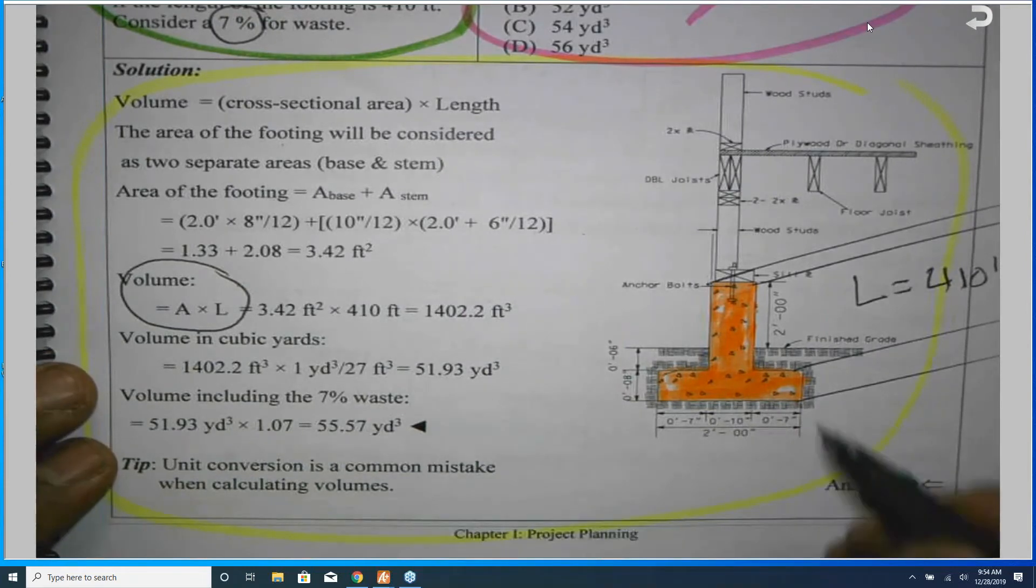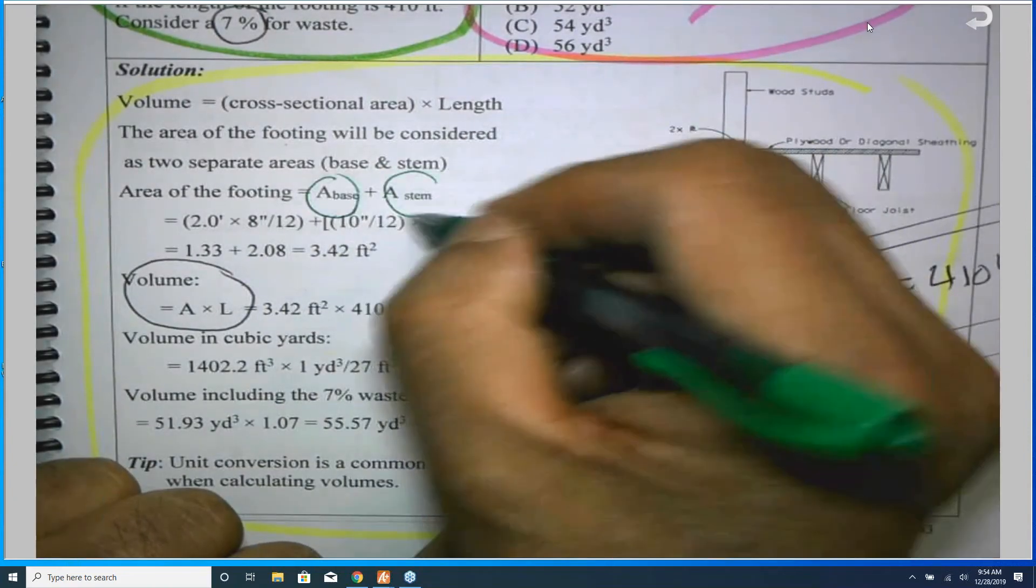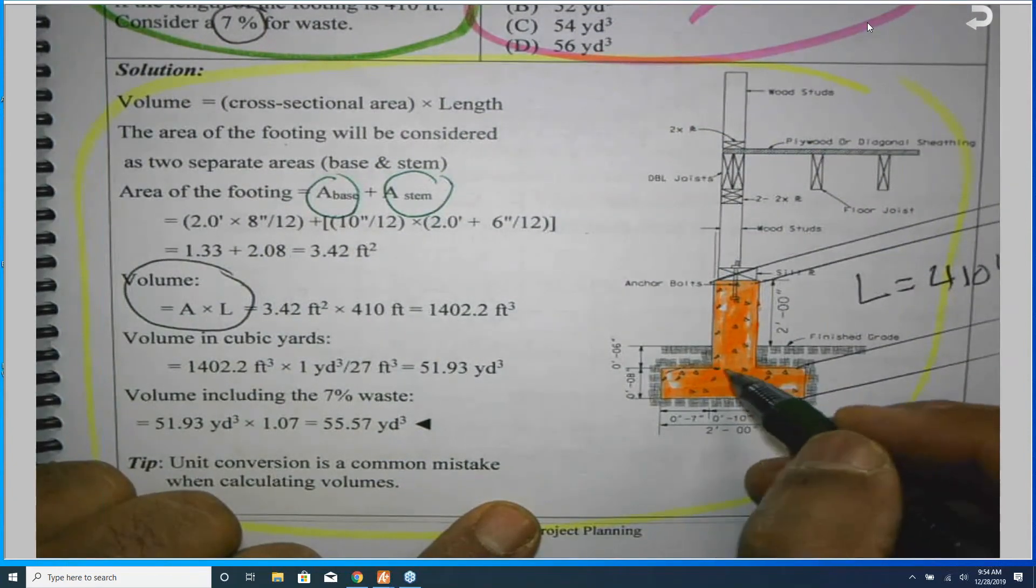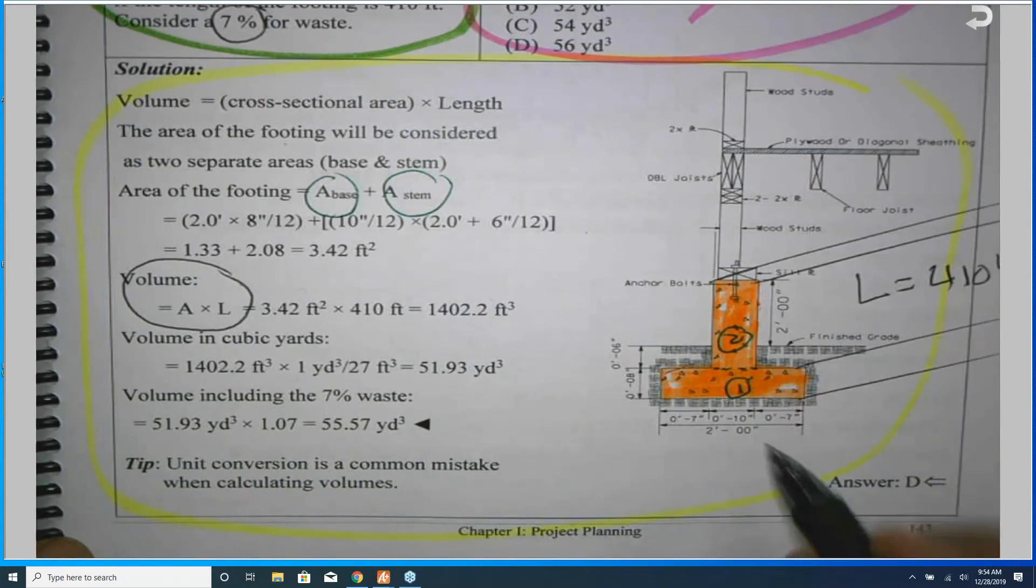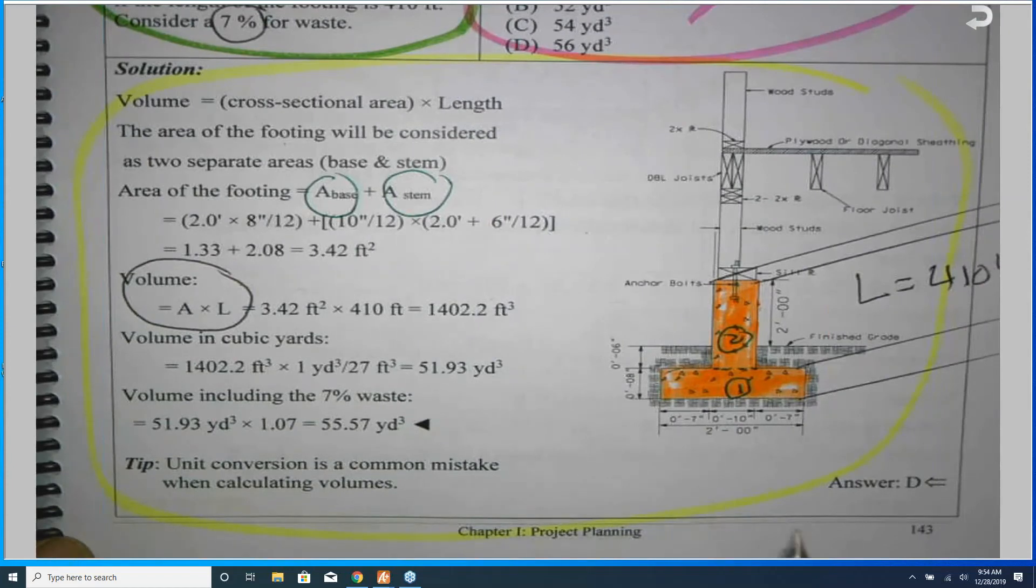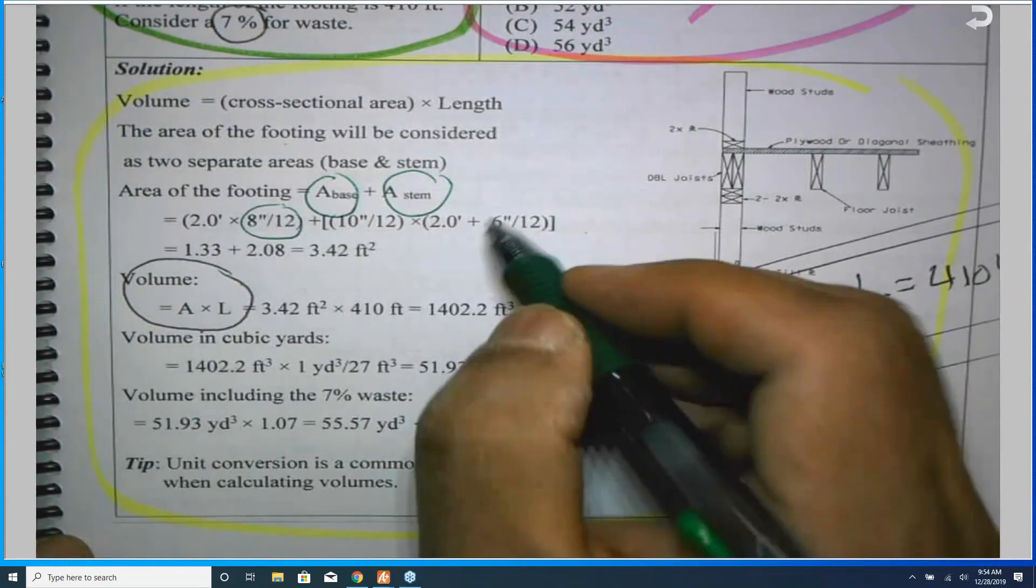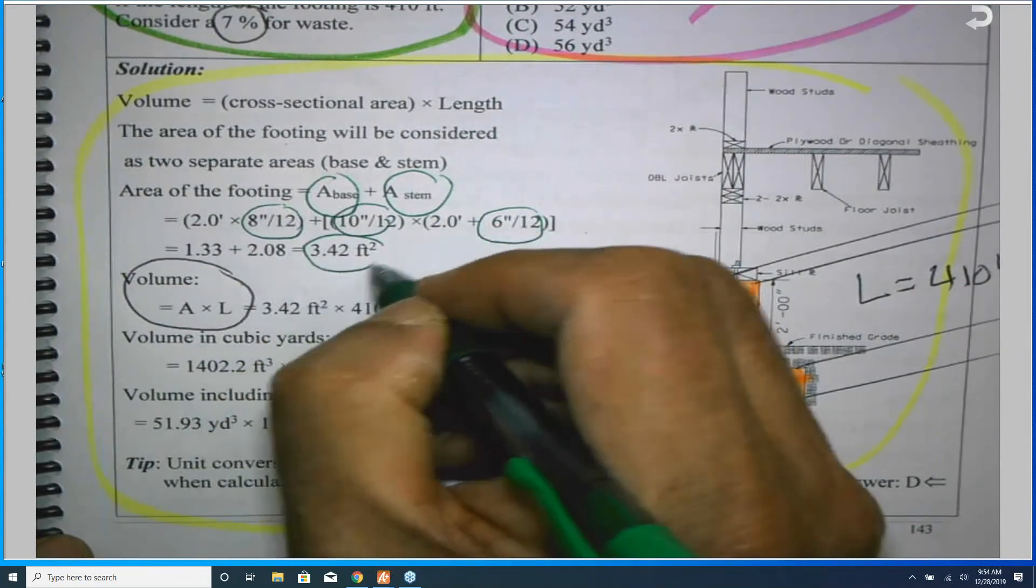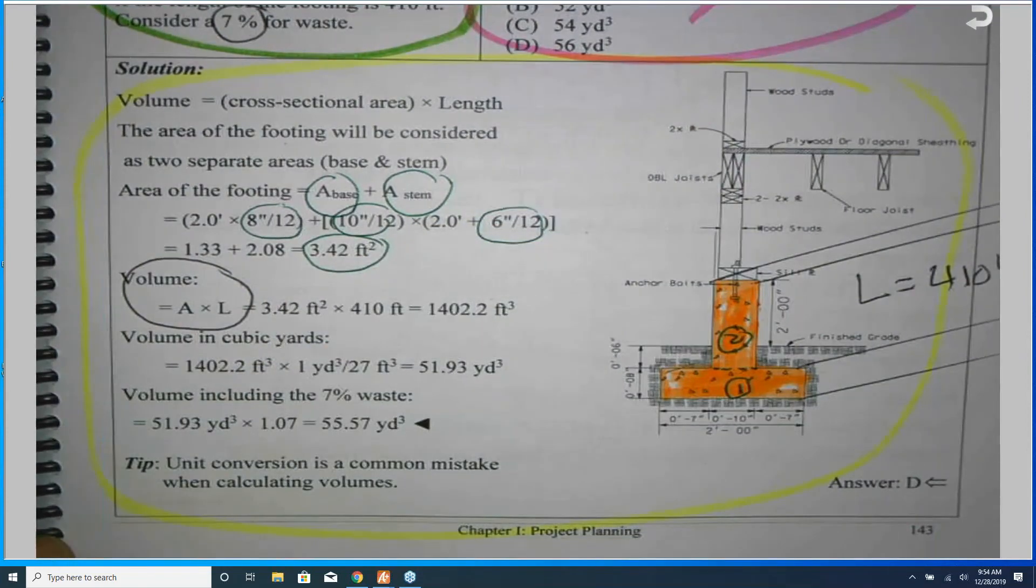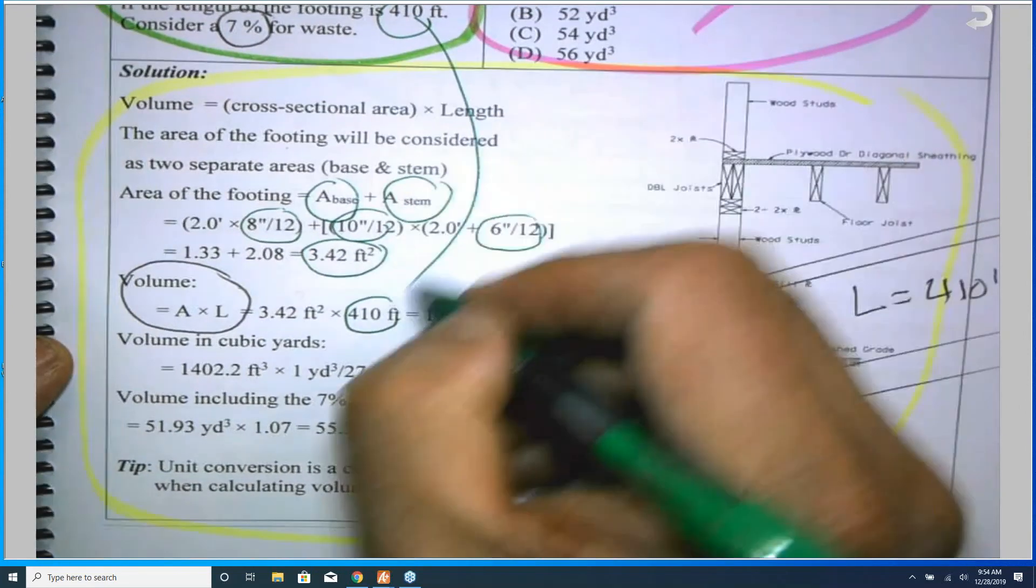So how can I get the area? This consists of two pieces - the base and the stem. So I can cut this into two areas, like this. So this is area number one, and this is area number two. Here you need to read the dimensions carefully, because they have inches and feet, and this is a very common mistake. So we need to convert - you see, the 8 inches I divided by 12, 6 inches divide by 12, 10 inches divide by 12. I get the cross-sectional area. After that, I know the length is given, L is given, here it is - it is 410.